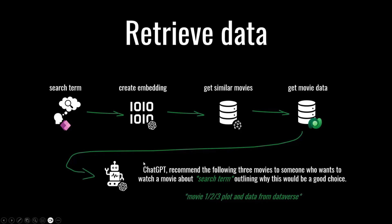In Pinecone only the IDs of the movies are stored, so we get our metadata back from our Dataverse database. Then, just like in the previous demo, we give context to ChatGPT and let it make sense of that - we give it the plots, summaries, names, and years of the movies, and ChatGPT tells us why each is a great movie to watch for the given search term.